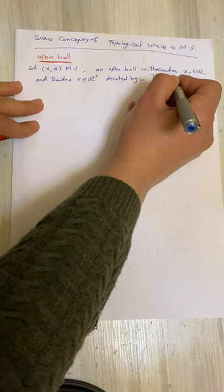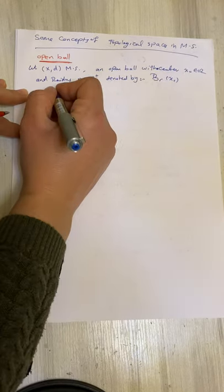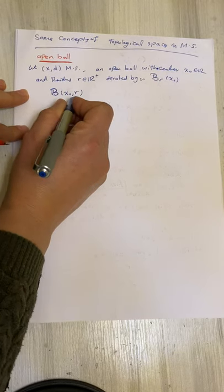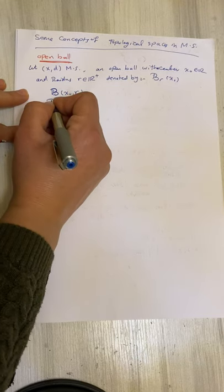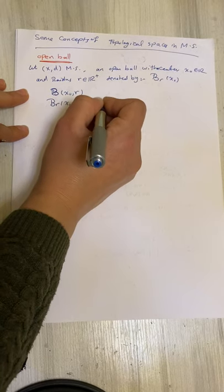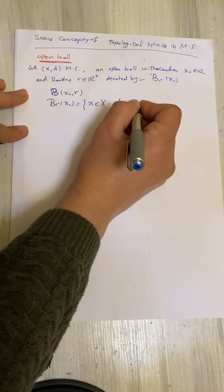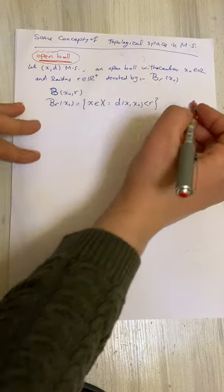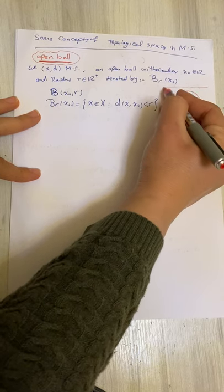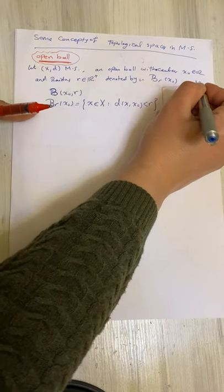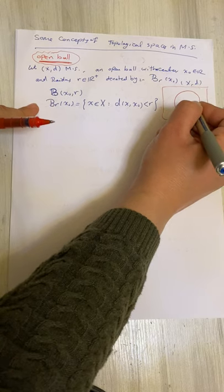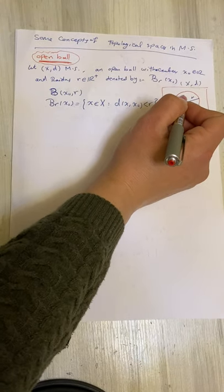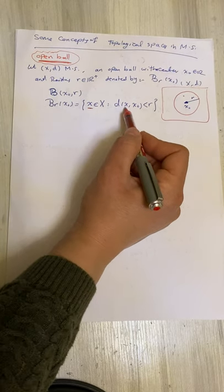B(r, x₀) is defined as all elements x in the metric space such that the distance between x and the center x₀ is less than r. All elements inside the ball satisfy this distance condition.